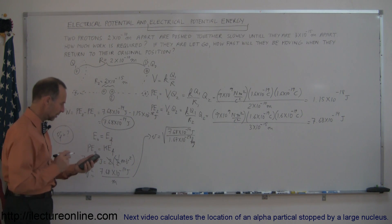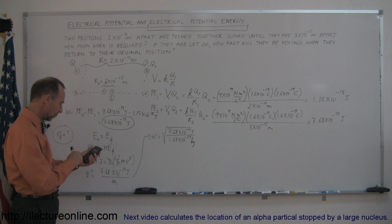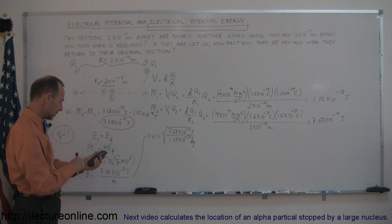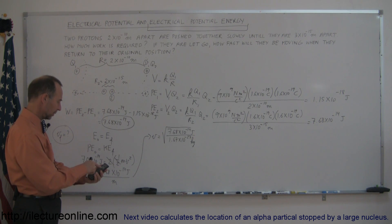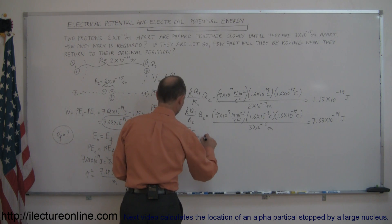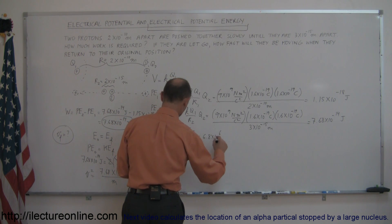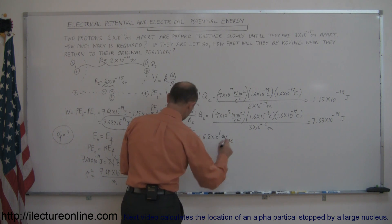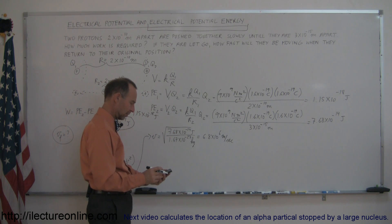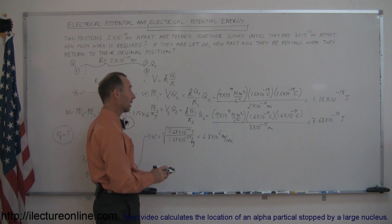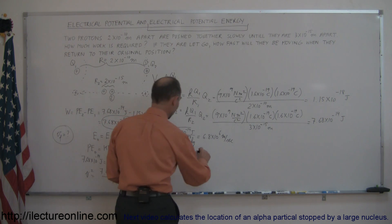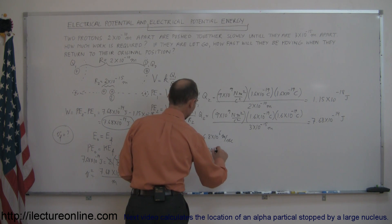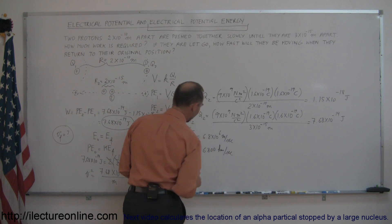Let's plug that into our calculator: divide 7.68 times 10 to the minus 14 by 1.67 times 10 to the minus 27, then take the square root. That gives us 6.8 times 10 to the sixth meters per second — 6.8 million meters per second, or 6,800 kilometers per second. Wow, that's quite fast!